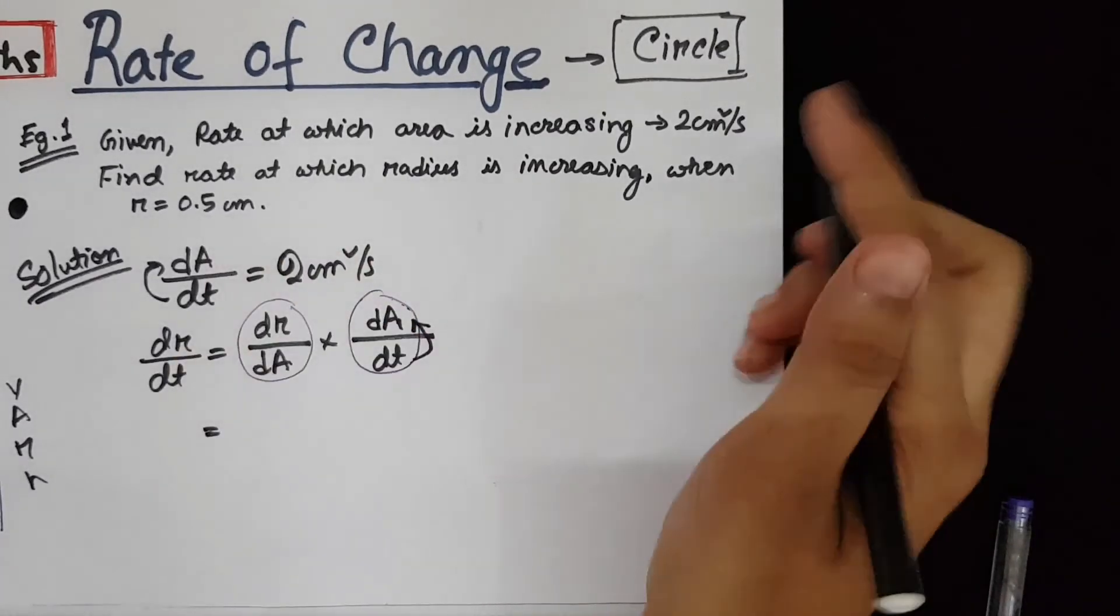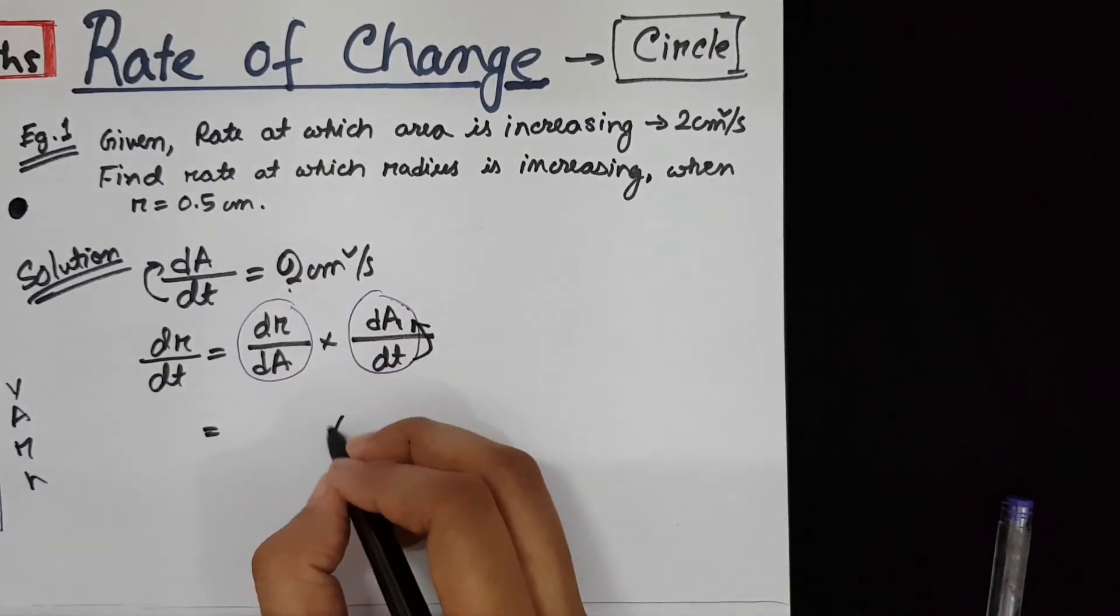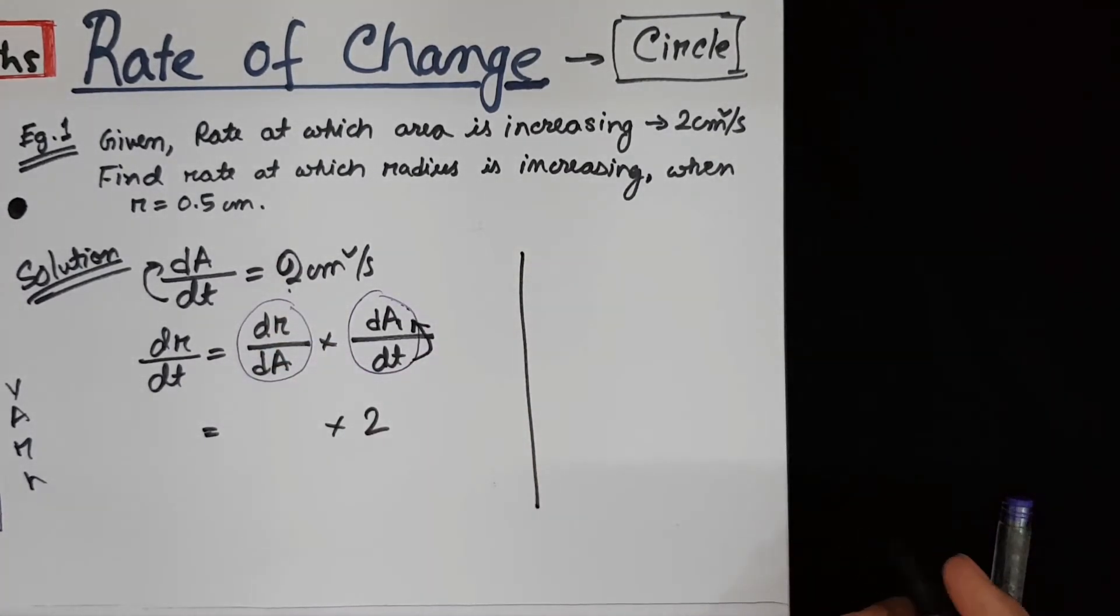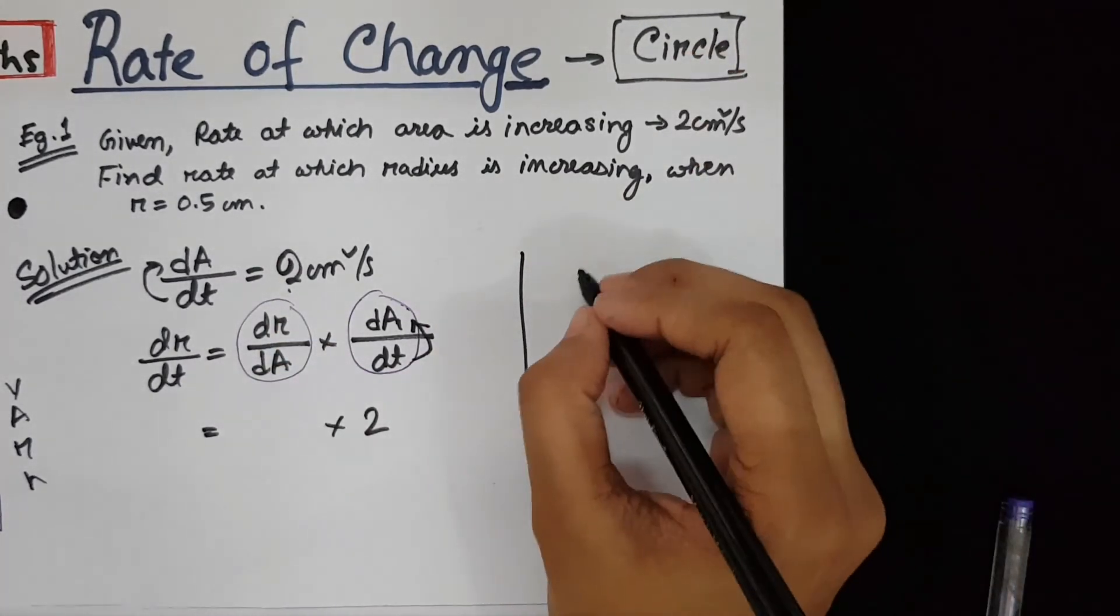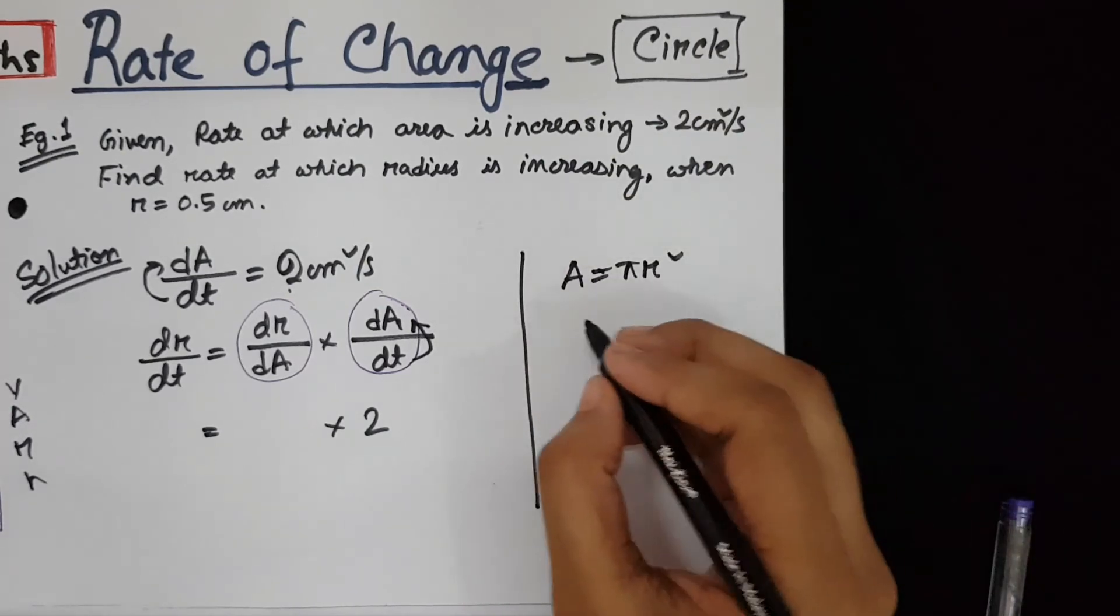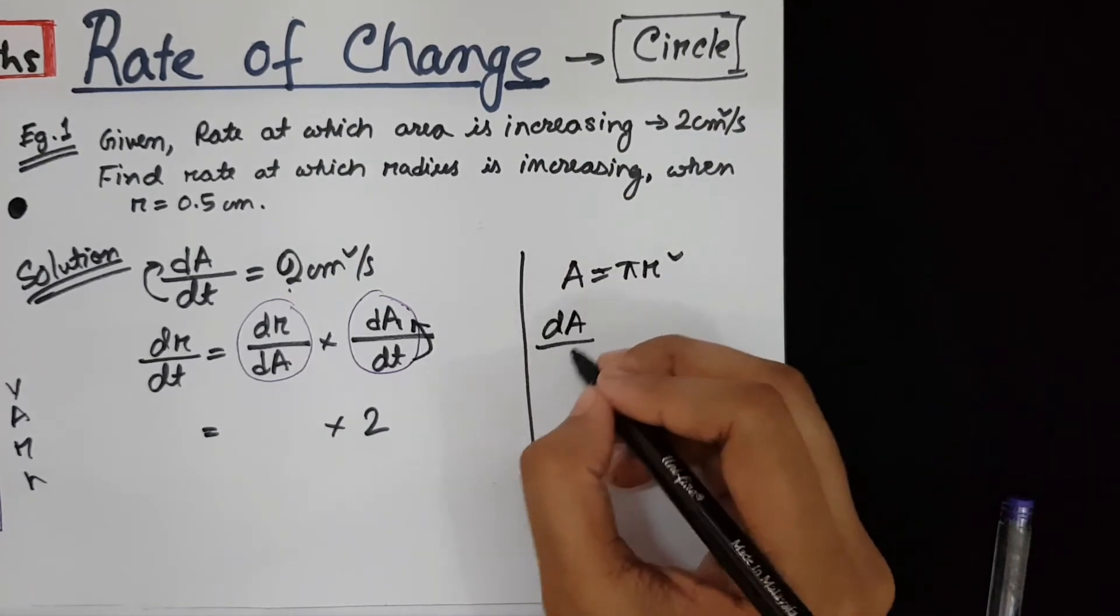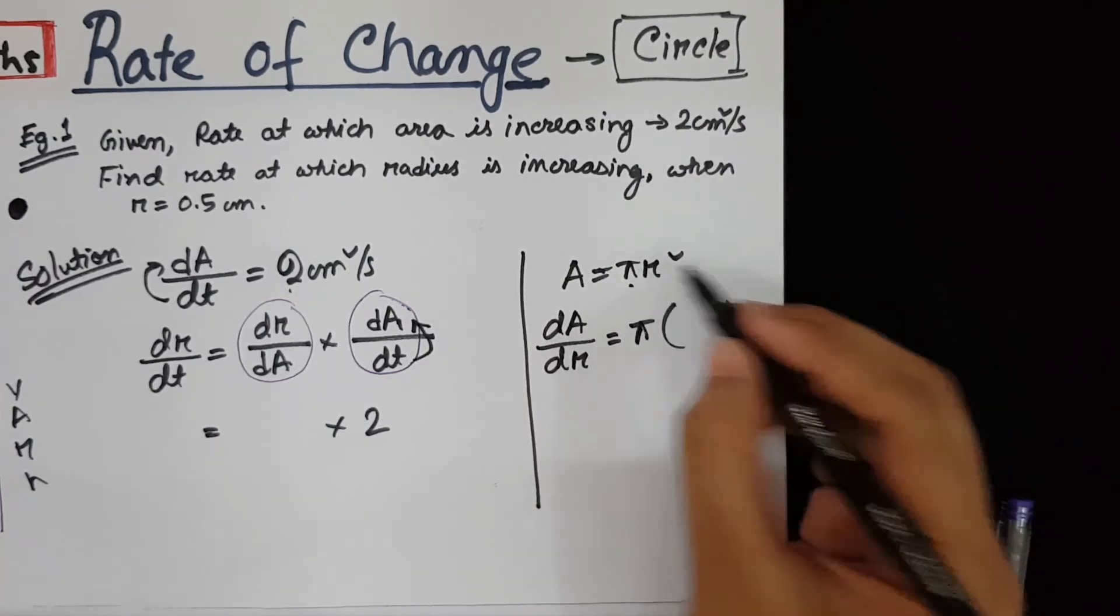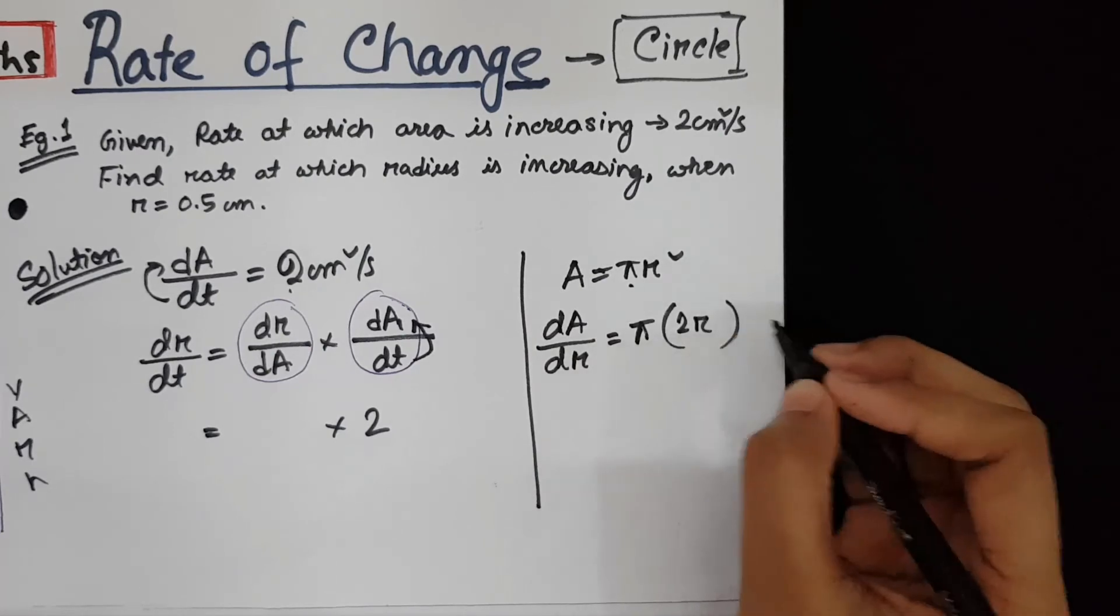So among these two terms, dA/dt, you know the value of dA/dt, which is 2. But you do not know this one. So since it is a matter of a circle, the area of circle is πr². So if we differentiate this dA/dr, π will stay there.